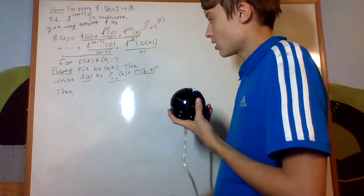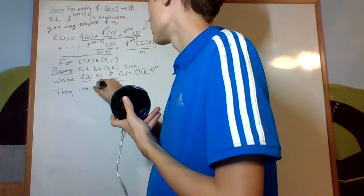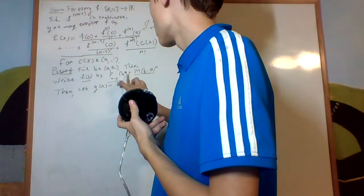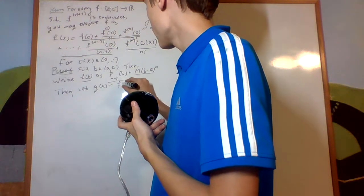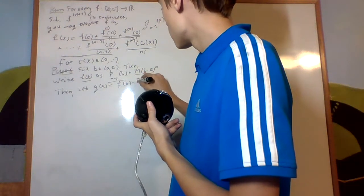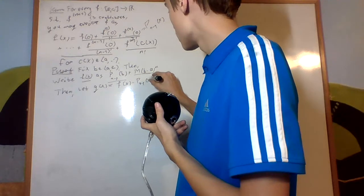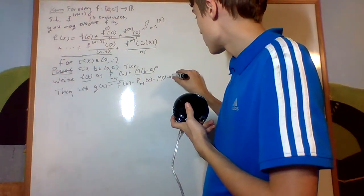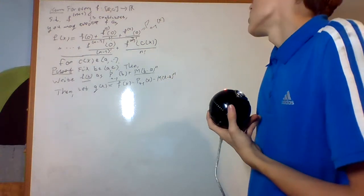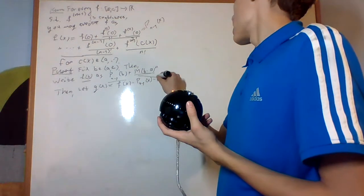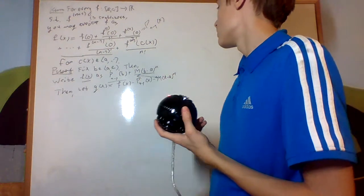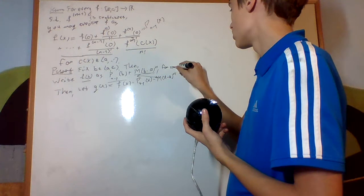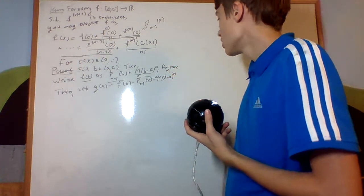Then, let g of x equal f of x minus p n minus 1 of x minus m times x minus a to the n, right? And that n is the same one as right there.